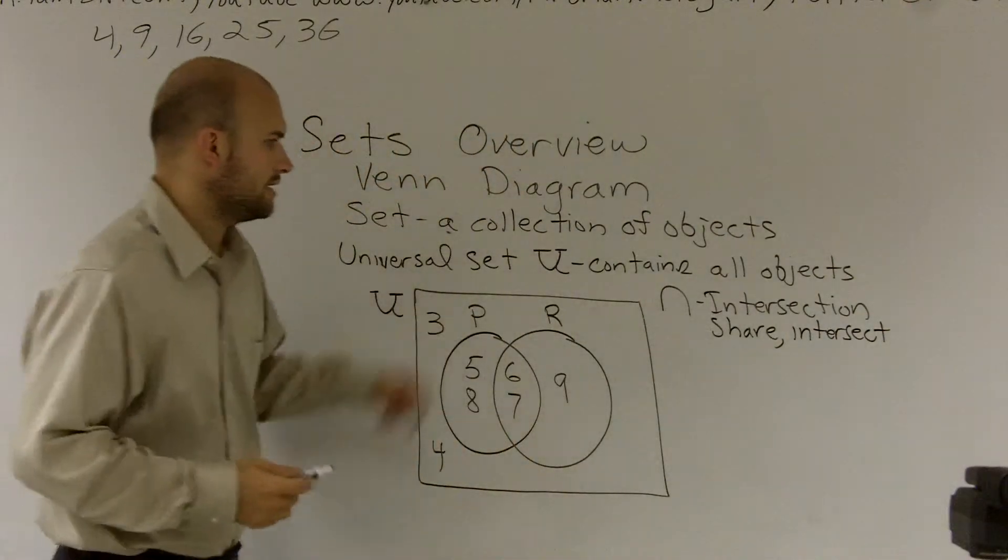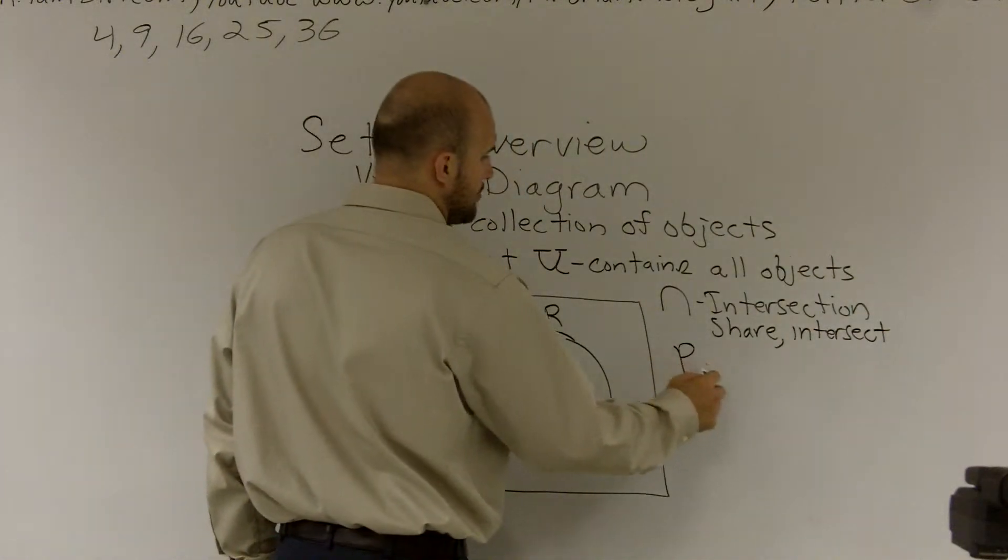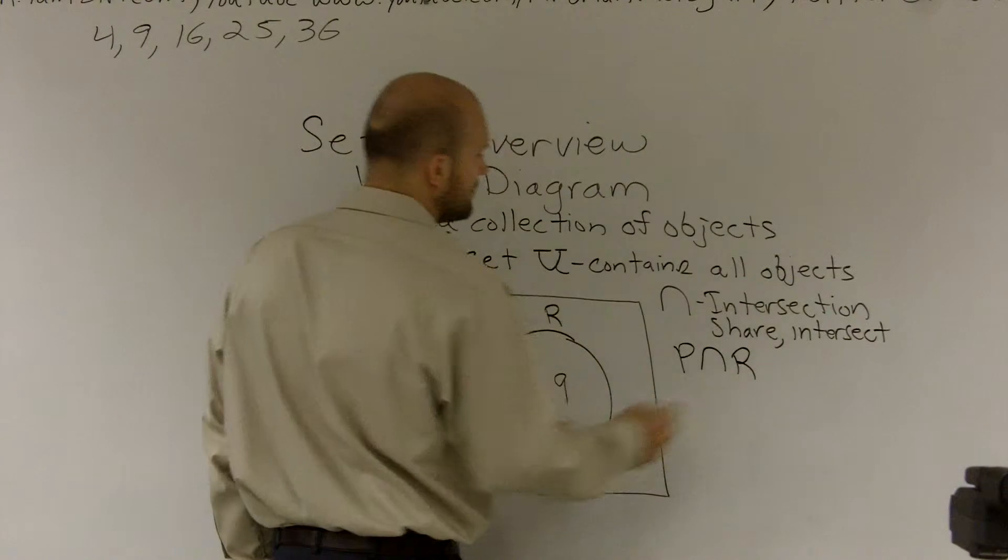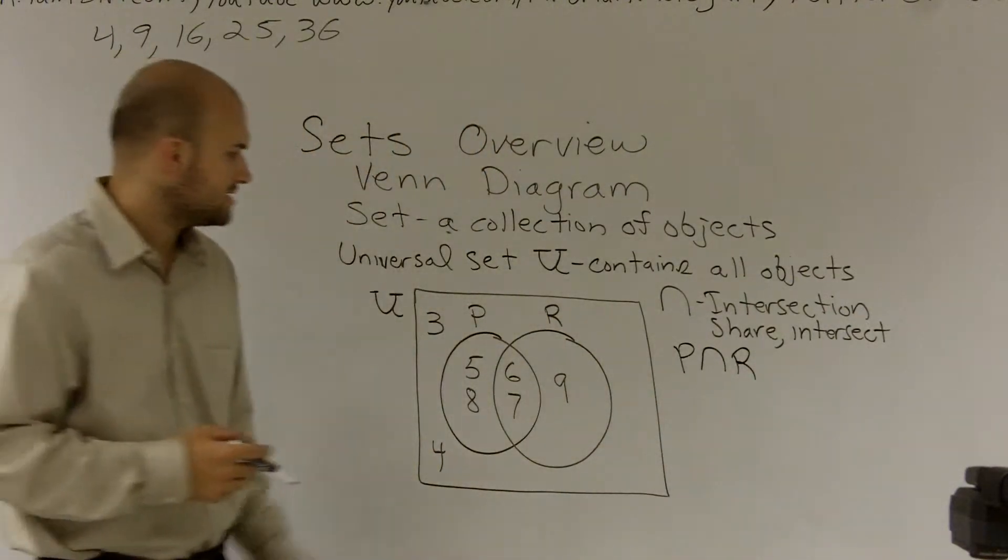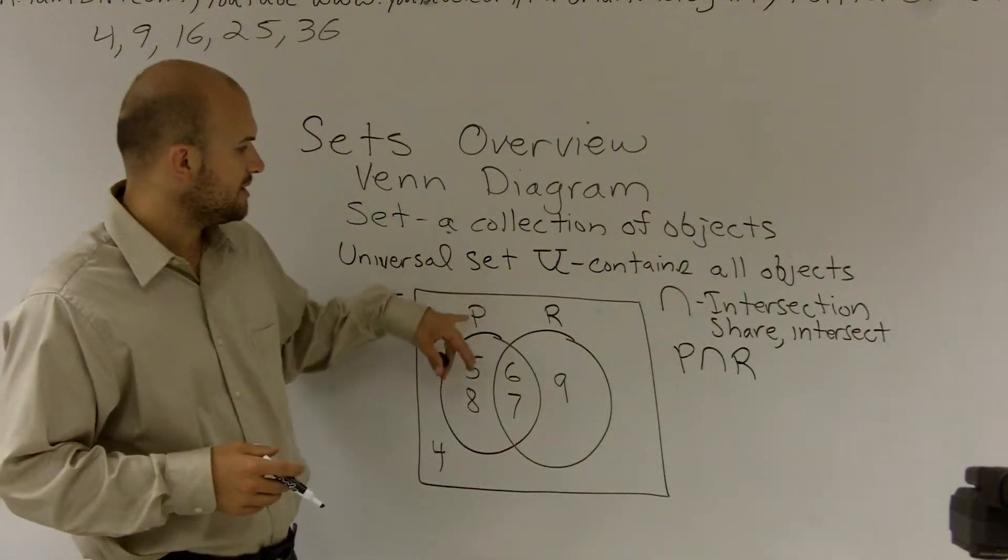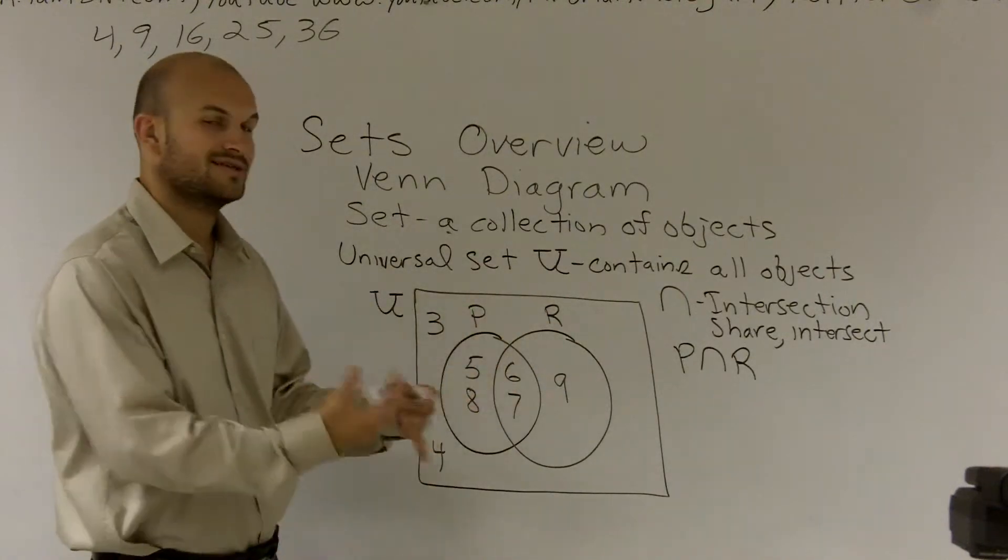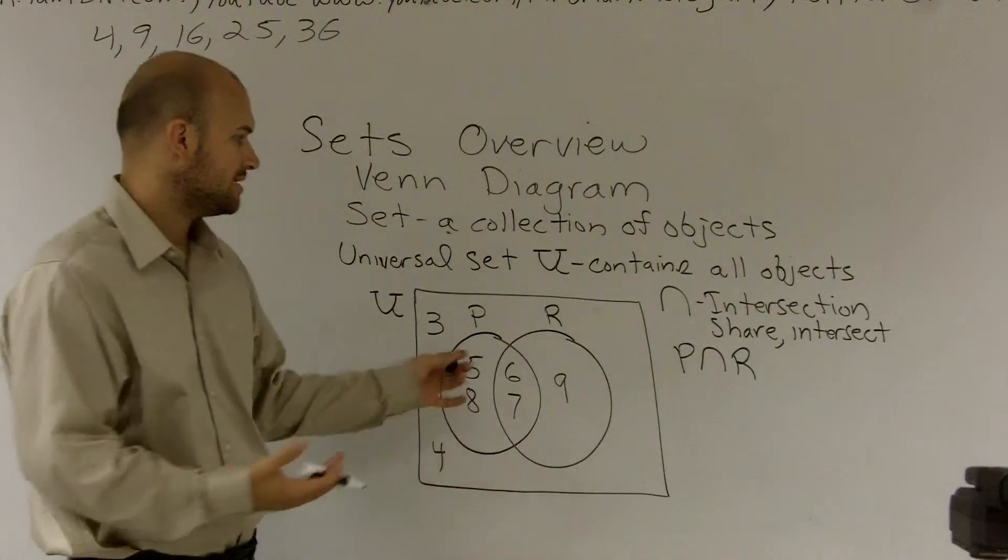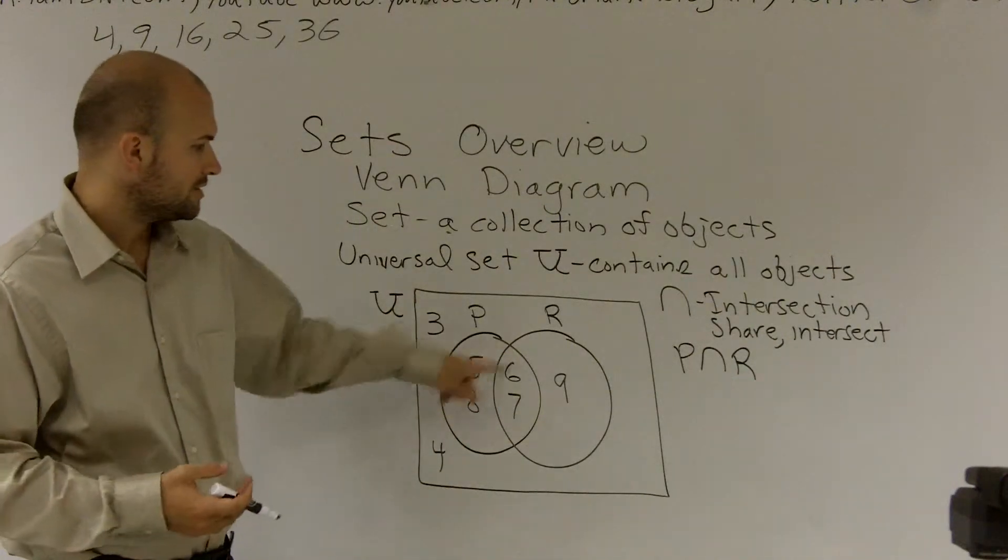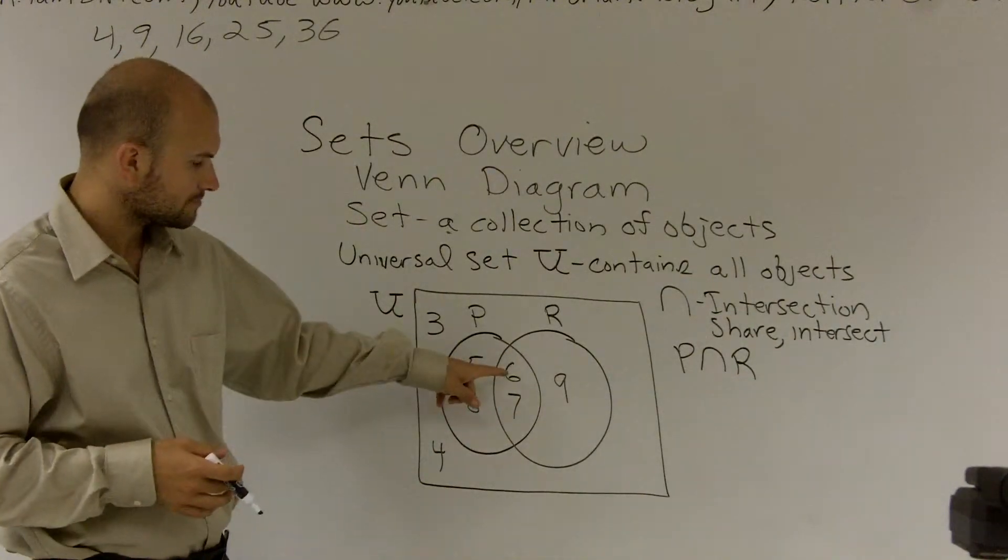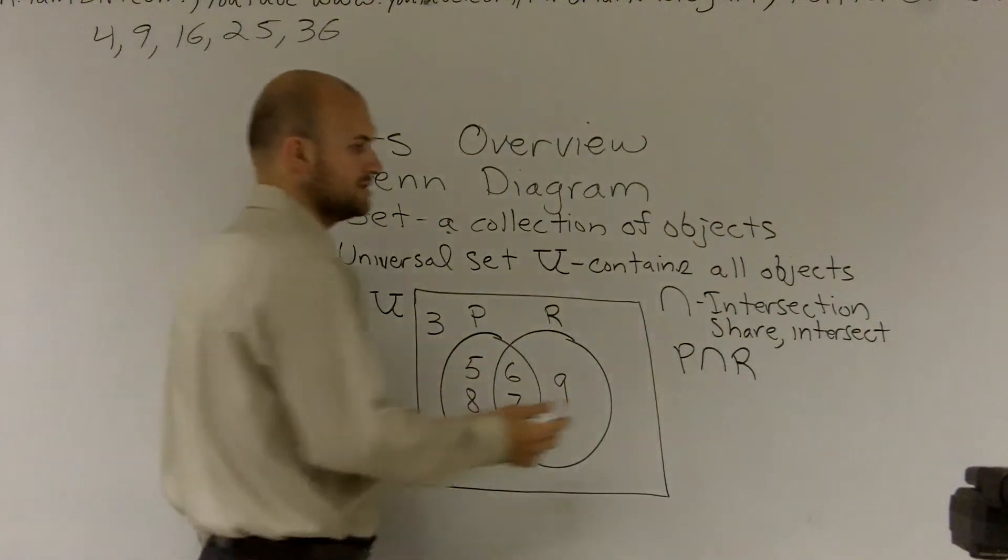So what I want to say, what is P intersect R? What I'm saying is, what are all the elements that are shared between P and R, or also that are in common with P and R? Or you could also say what intersects the two circles of P and R? And what you notice is 6 and 7 are your only two elements.